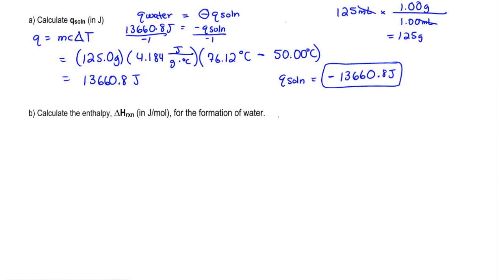Here we have to figure out the enthalpy of water. We're going to say delta H of reaction equals Q of solution divided by the moles of whatever they're asking us to find. Here they're asking for the formation of water, so it's moles of water. We already have half of this because we just figured out what the Q of solution was, so we just plug it in.